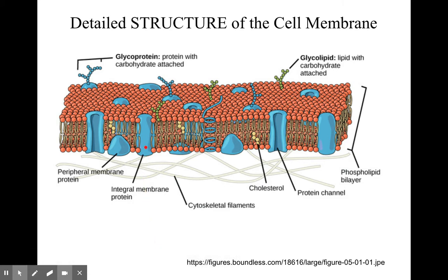The blue in this particular diagram — these are proteins. You have integral membrane proteins, which sometimes have structures coming off of them that identify the cell. We'll be talking about these channel proteins — holes in the cell membrane that let things through, dependent on size.